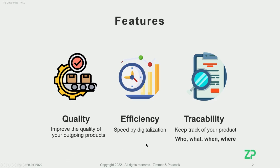You have efficiency through the speed of digitalization. You have traceability by being able to keep track of your product — who was doing the outgoing quality control, what was doing it, when and where. How? Well, hopefully Bakesense.